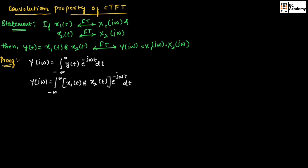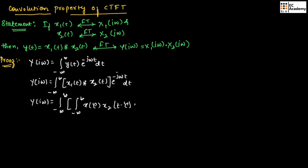Using the property of convolution, we can expand the convolution term. In place of the convolution, we write the standard formula: integration from minus infinity to infinity of x1 of tau into x2 of t minus tau d-tau, into exponential to the power of minus j-omega t dt.